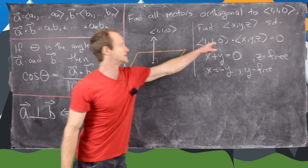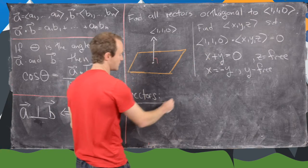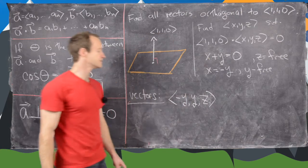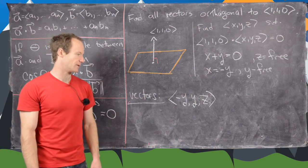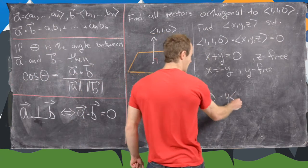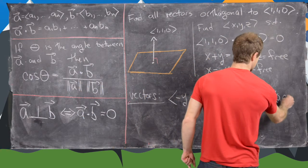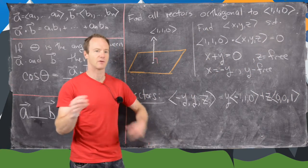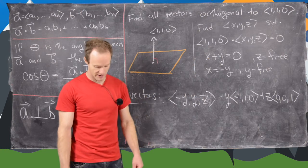So now if we put this back into our vector, we get all vectors of this form: minus y, comma y, comma z. So remember, z was free, y was free, and then x had to be negative the y component. But now notice we can write this as a linear combination, y times negative 1, 1, 0, plus z times 0, 0, 1. And if you've had some class in linear algebra or something, you might write this as the span of two vectors, but since this isn't that type of class, we can just leave it right here.